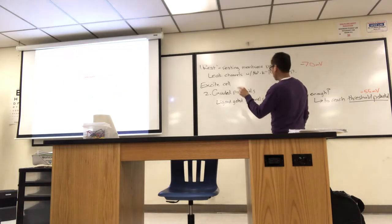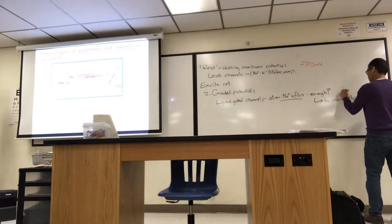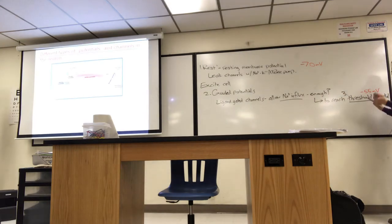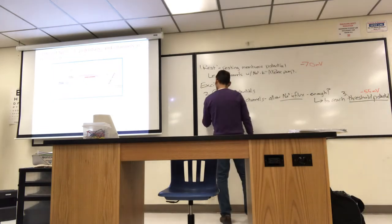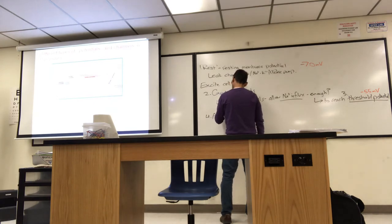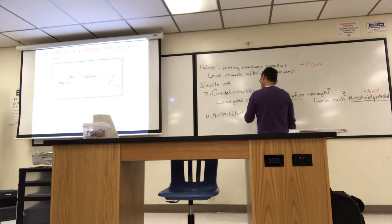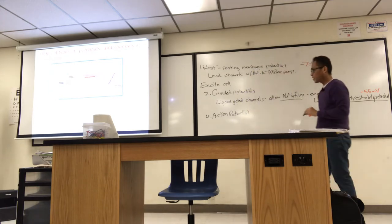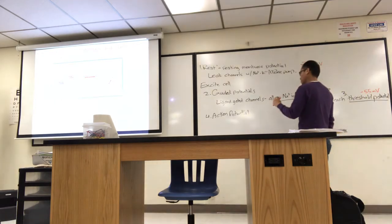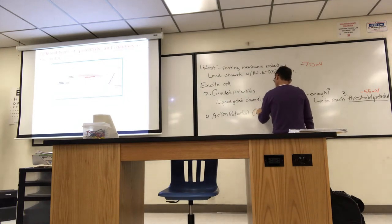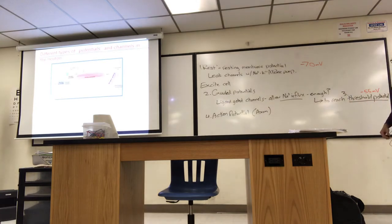So number three is threshold potential, just to follow the figure. If you reach threshold, yes, then you trigger an action potential, number four. The action potential, the area of output is the axon. Think axon when you think action potential.